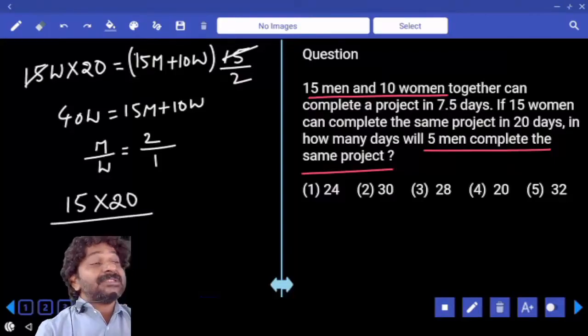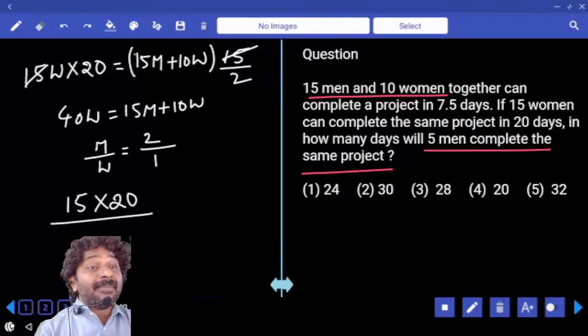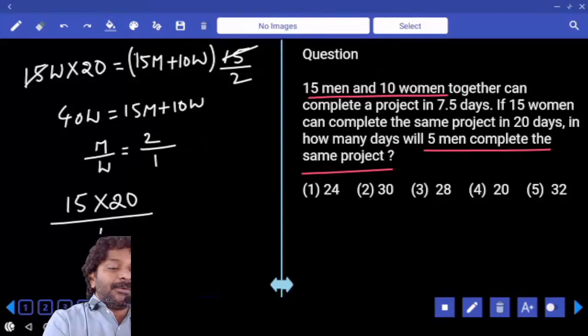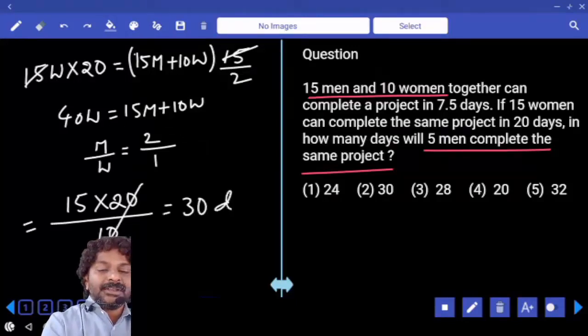This must be done by 5 men, where one man can do 2 units, then 5 men can do 10 units per day. Then time taken is equal to 30 days.